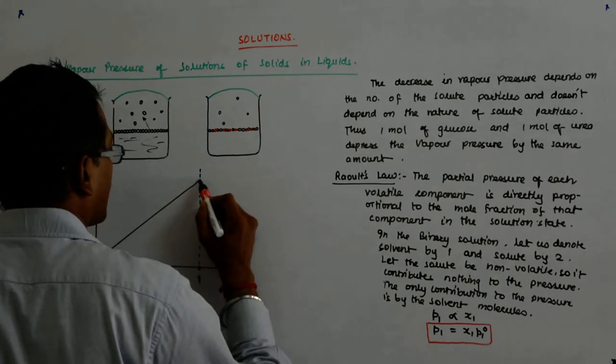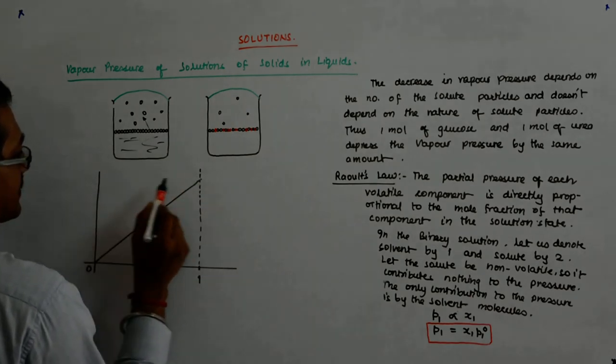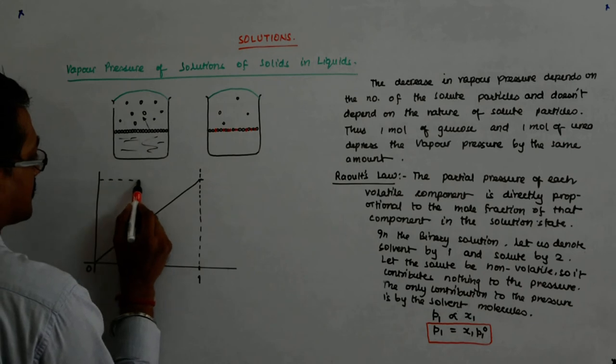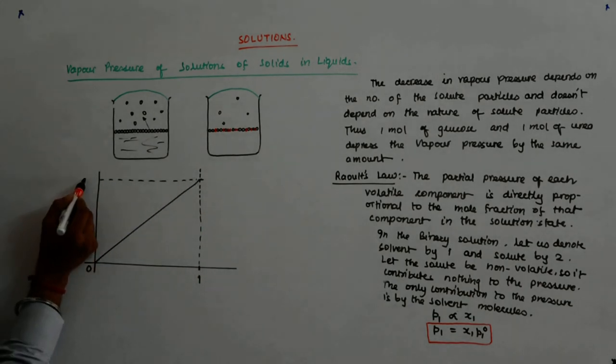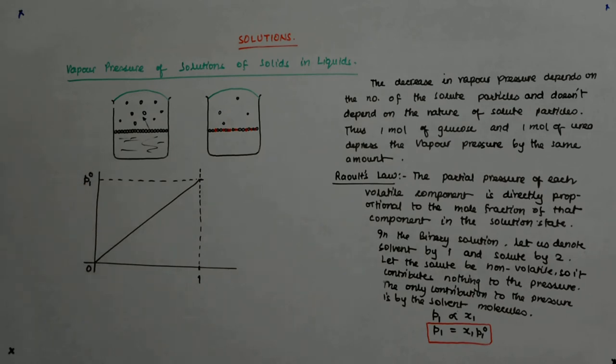So it sort of becomes something like this, is it not? Where this value becomes P1^0. This is P1^0 and this is 0. This is how the curve will be plotted.